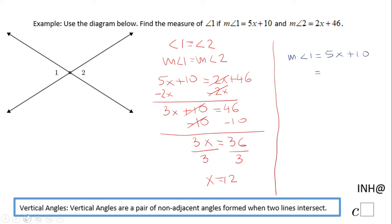Okay, so I'm going to have 5 times 12 plus 10 and that will be 60 plus 10 and that will be 70. 70 degrees is the measure of angle 1.